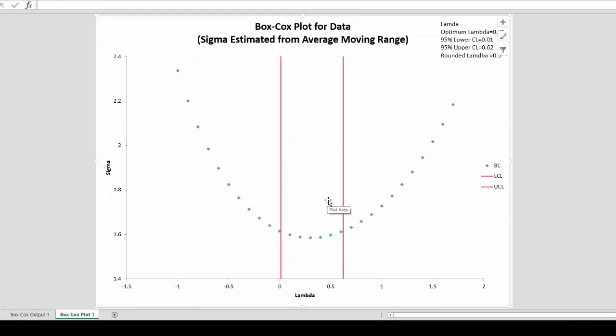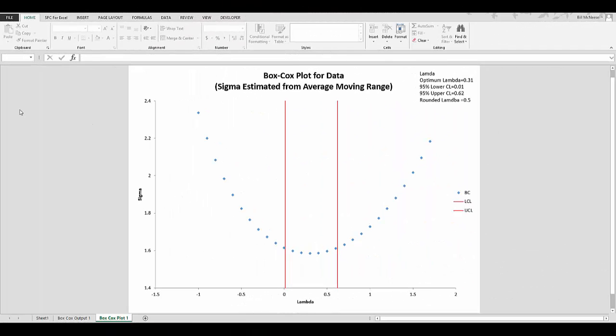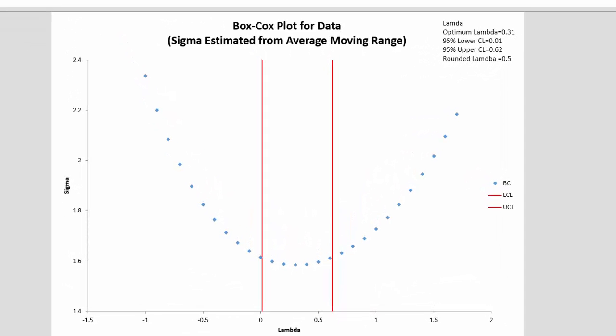Now let's take a look and see what those results mean. This is the first chart that's shown for the Box-Cox plot, and what it is, it's a plot of sigma versus the values of lambda. Remember, what we're trying to do is minimize the standard deviation by finding the different values of lambda.